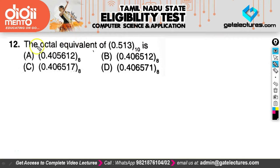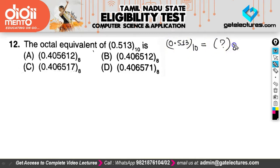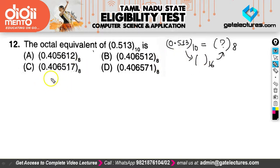The next question asks for the octal equivalent of the decimal number 0.513. There are two ways to solve this: first, convert to base 16 and then back to base 8, which is quite easy. But today we'll use the standard method of multiplication. We take 0.513 and multiply repeatedly by 8.